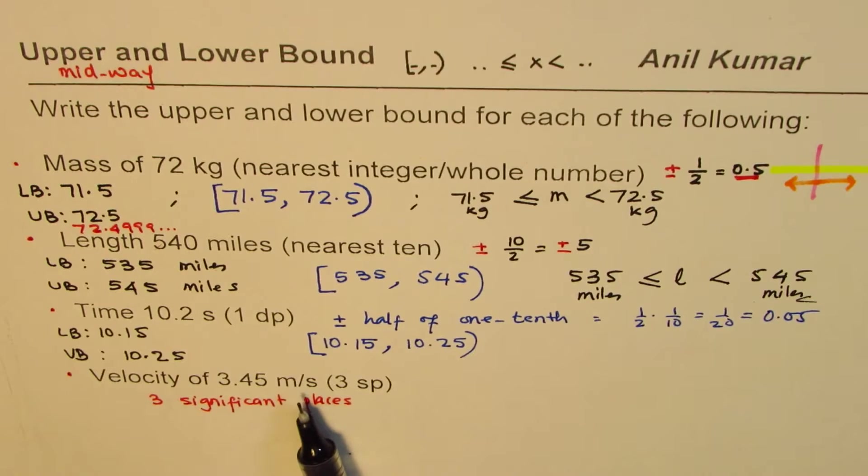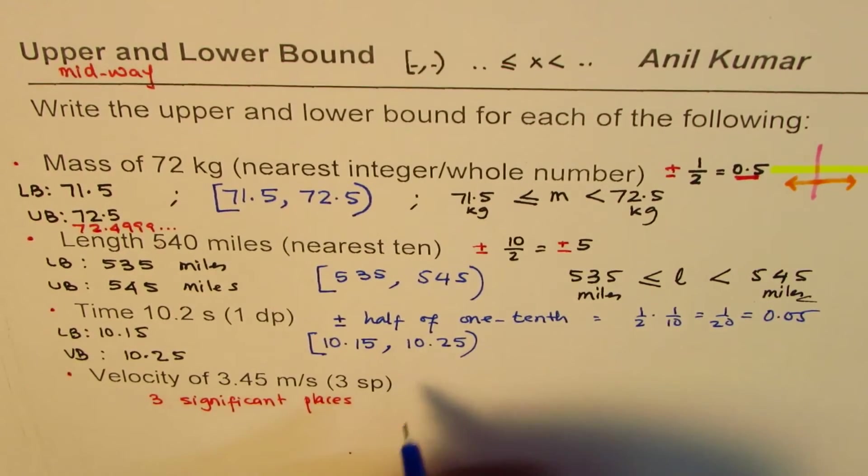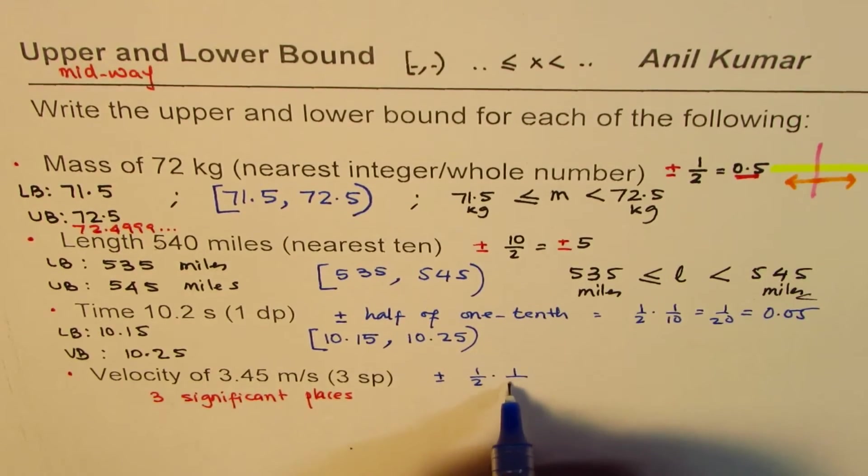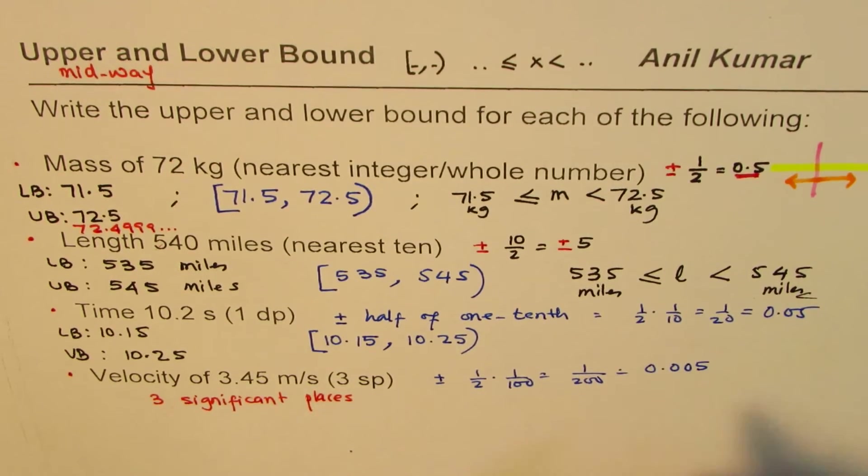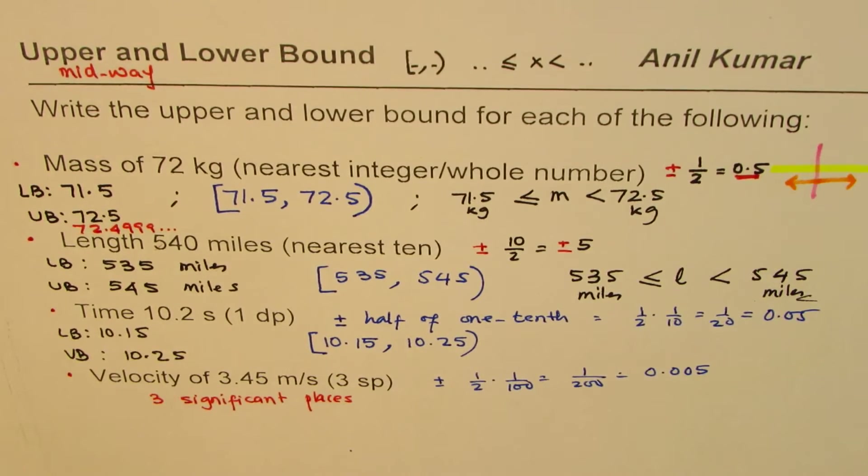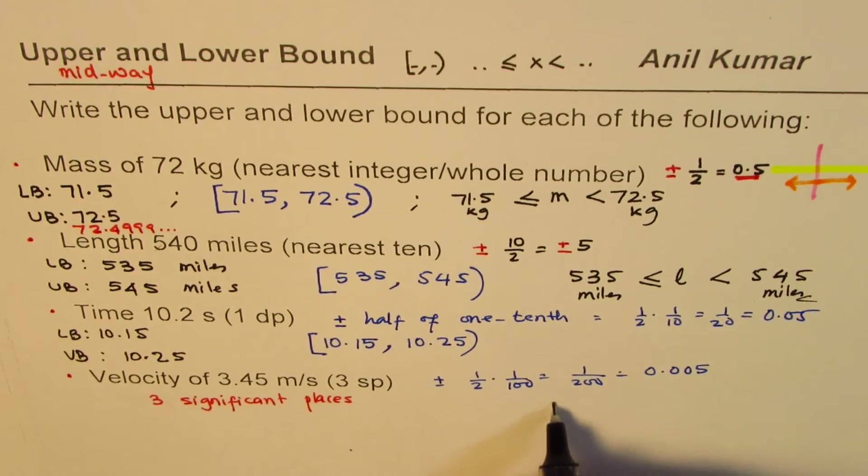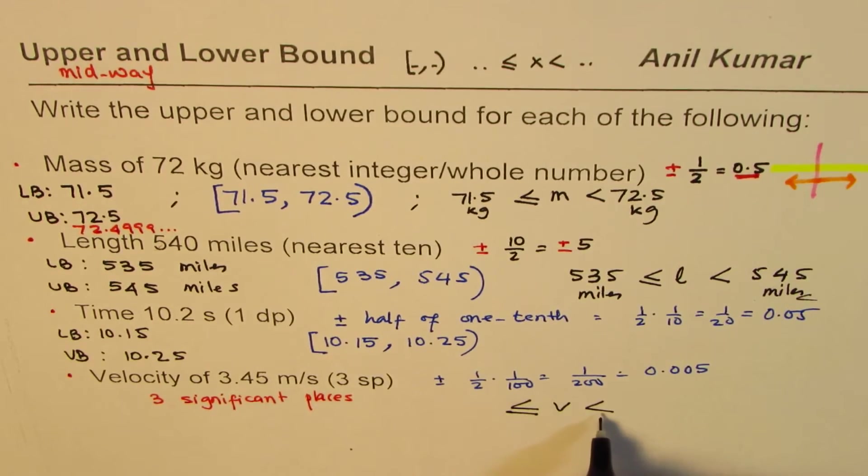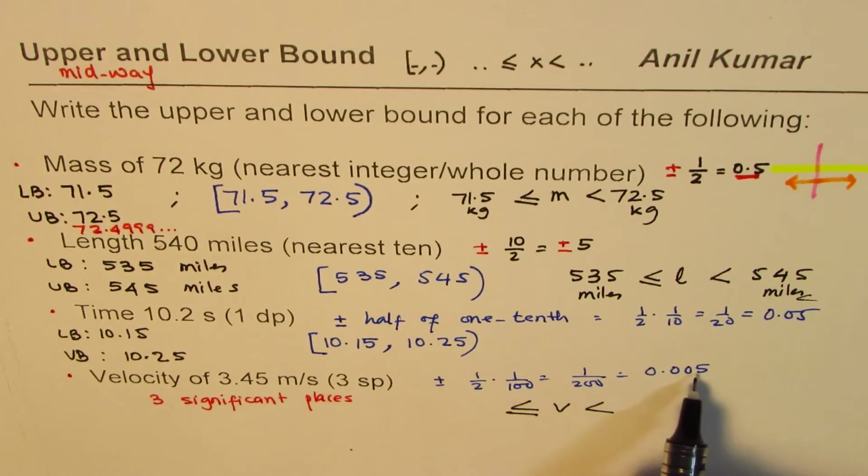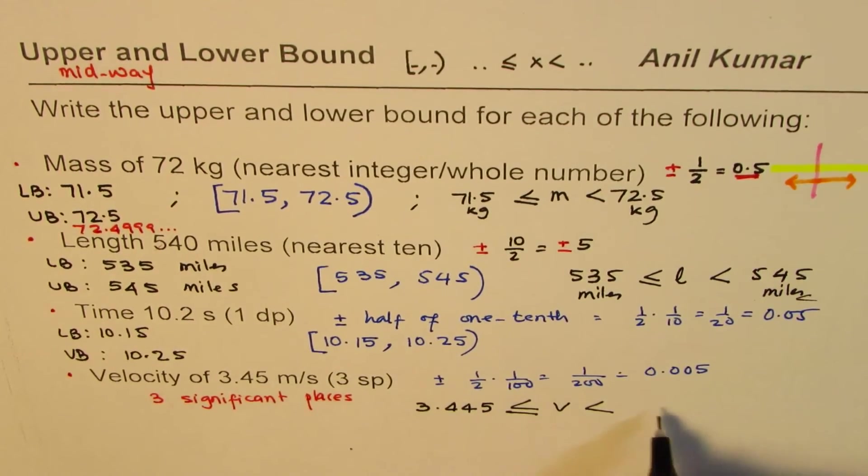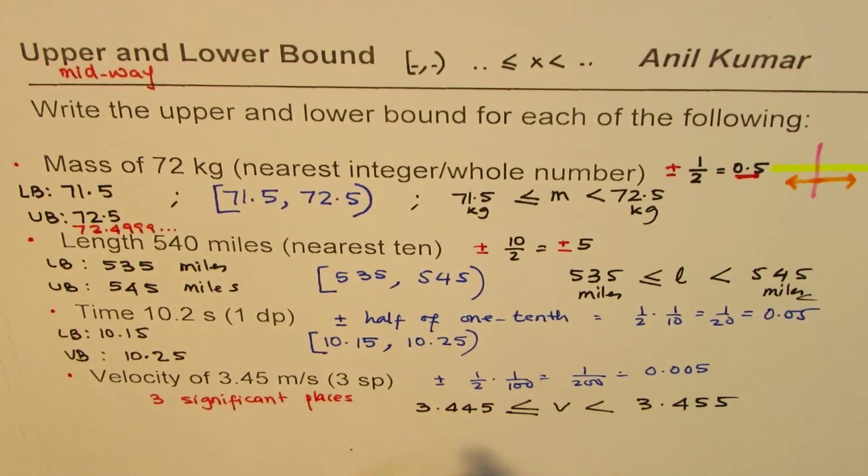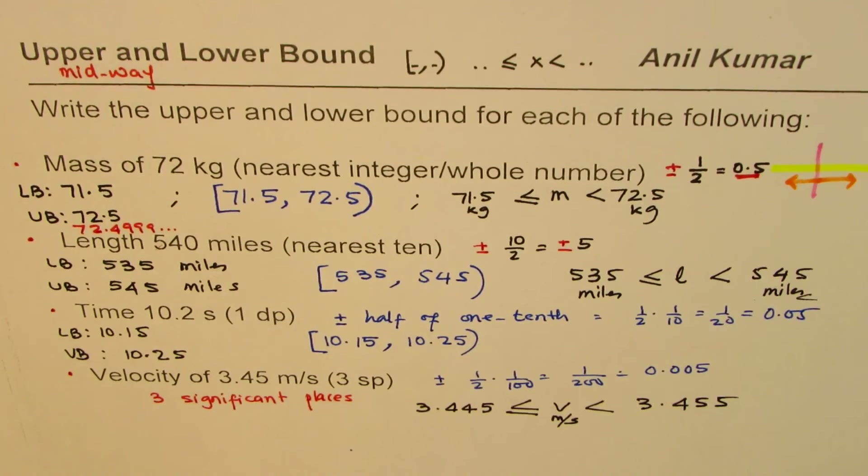Velocity of 3.45 meters per second, three significant places. One, two, three, so that becomes one hundredth. If I do half of 100, we do plus minus half of 100, so that means 1 over 200, so that means one more decimal place, 0.005. Let me rewrite this with its upper and lower bounds. The lower value, taking away 0.005, will make it 3.445 and adding 0.005 to the right will be 3.455. The velocity units will be meters per second.